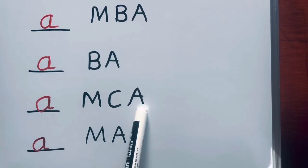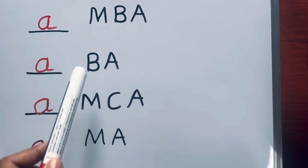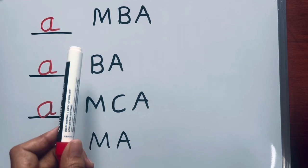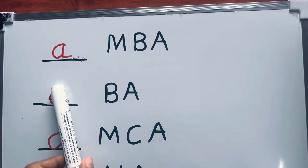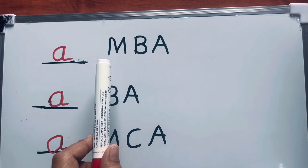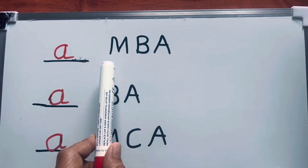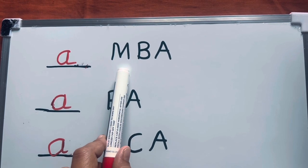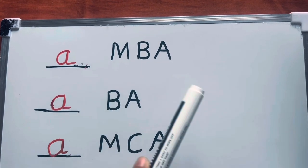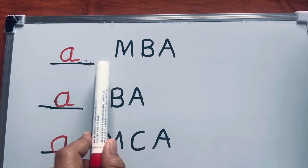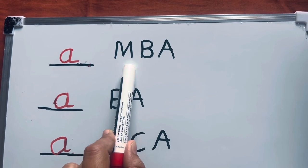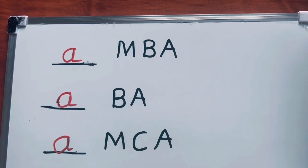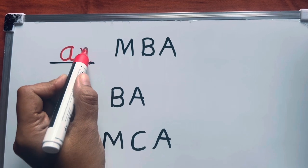MBA, BA, MCA, MA - these are the names of degrees. Whenever we have a name of degree, we have to check the first letter. We cannot check like the sound of M is a consonant sound, so we have to write A MBA. It's wrong. See, MBA starts with M, which is pronounced as 'em'. Em starts with E, and E is a vowel, so an MBA.